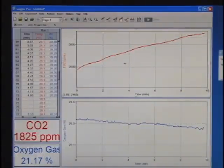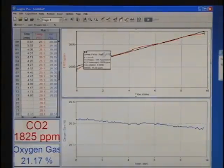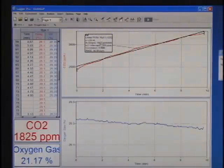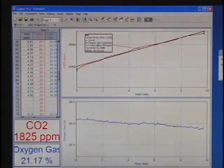Click on Linear Fit on the toolbar and record the slope in your data table. This is the rate of CO2 production for the germinating peas.